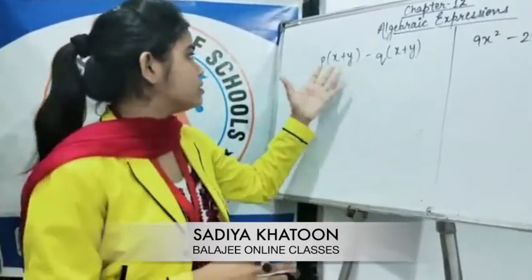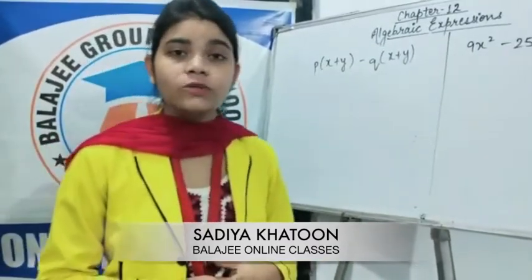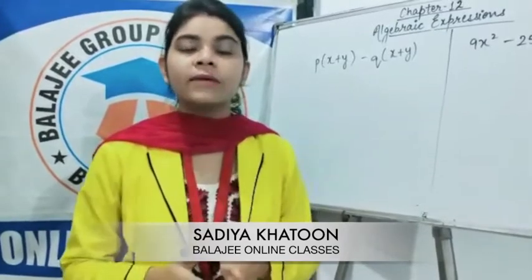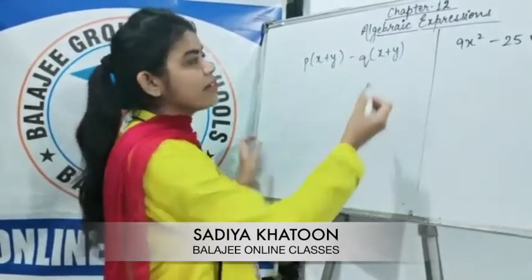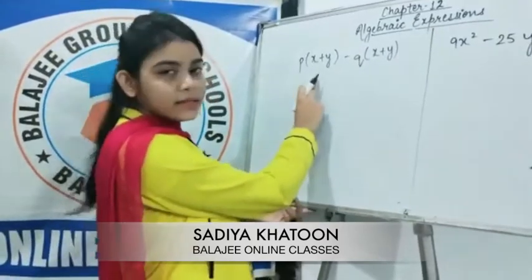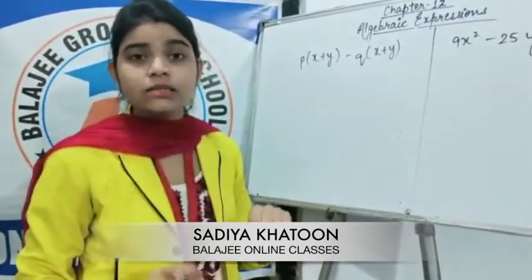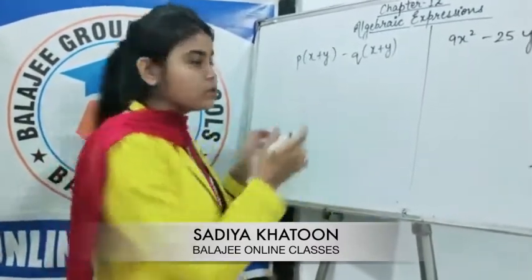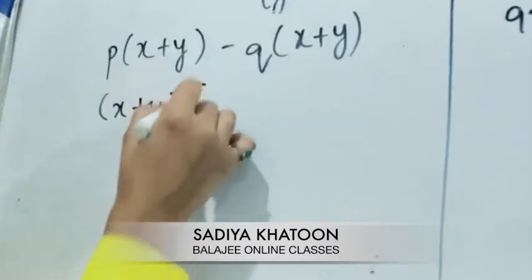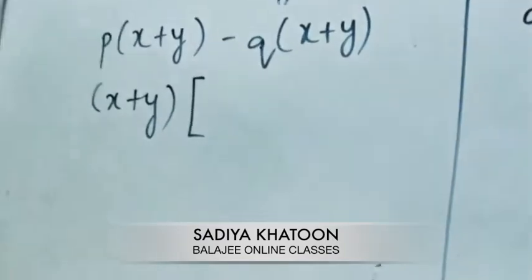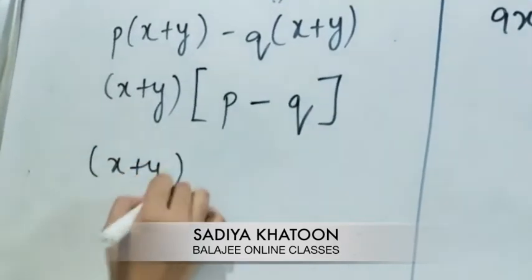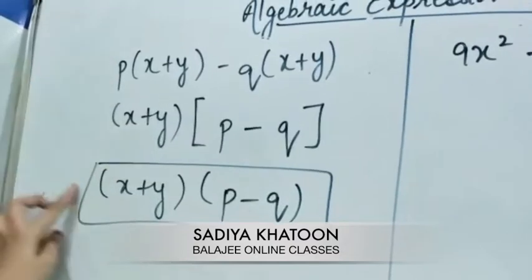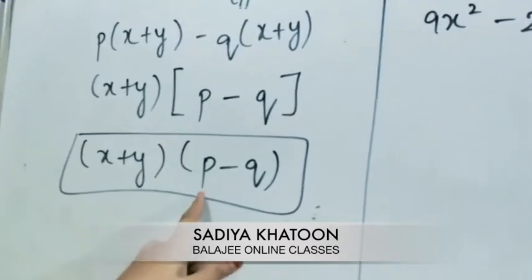Now we come to the last topic of this chapter: factorization. Consider the expression p(x + y) minus q(x + y). You can see that (x + y) is common in both terms. So we take (x + y) as common. What remains is p in the first term and q in the second term. So the factorized form is (x + y)(p − q). These are the two factors of this expression.